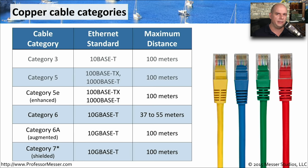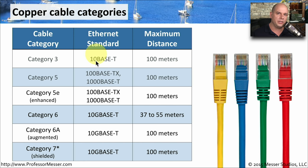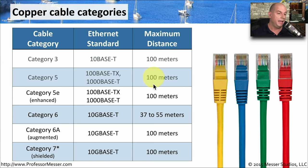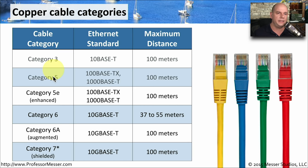Not all twisted pair cables are created the same, so we've created a set of standards called cable categories that describe how a cable is manufactured. Category 3 was one of the earlier ethernet cables, supporting 10Base-T up to 100 meters. Category 5 was used for 100Base-TX and 1000Base-T, also up to 100 meters. We no longer see Category 3 or Category 5 — those category types are now deprecated. We tend to see Category 5E and higher these days.